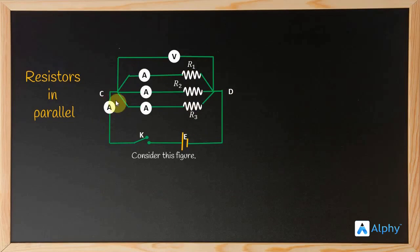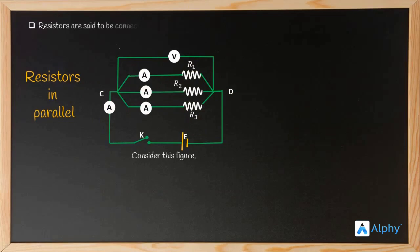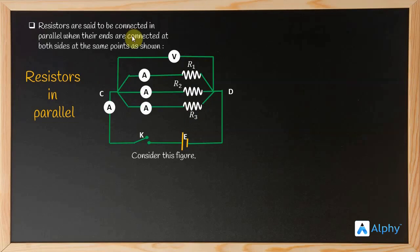In our series connection, R1, R2, R3 are along one line, so when current flows it is the same flow. But in parallel connection, the current also flows the same way. Resistors are said to be connected in parallel when their ends are connected and both sides are at the same point, as shown.